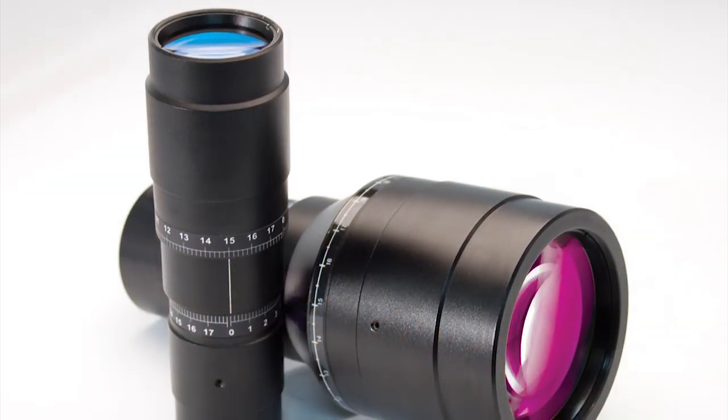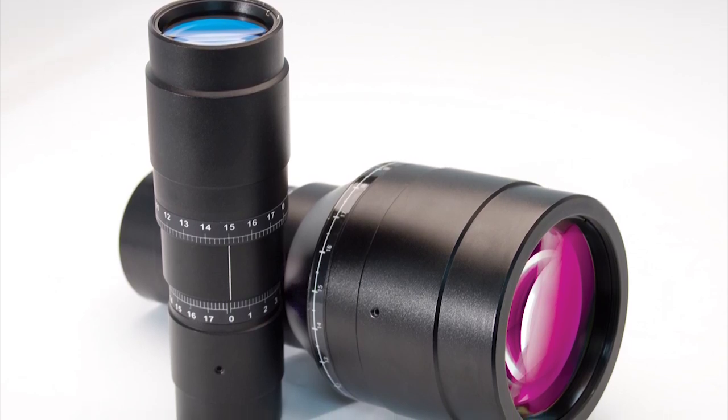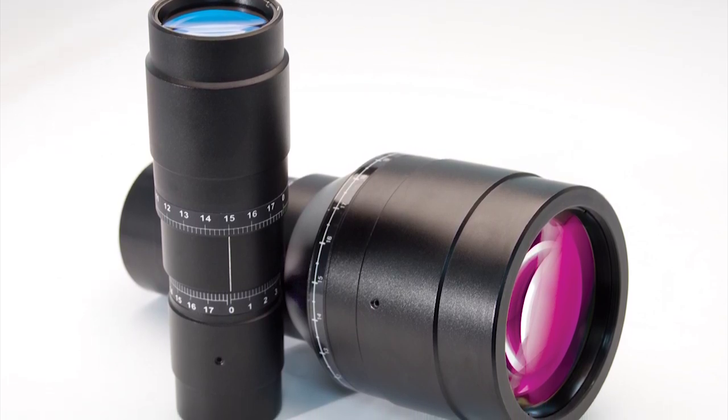Zoom beam expanders have a range of expansion power such as 1-3x or 2-8x as seen with our line of zoom beam expanders. These have a focusing knob like the fixed power beam expanders as well as a knob that allows for the range of zooms.